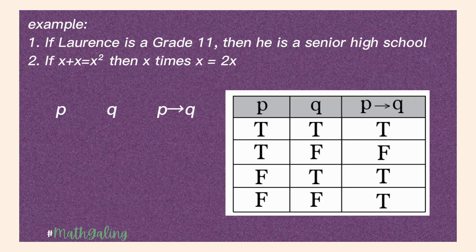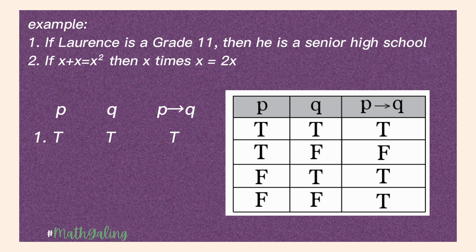Example: 'If Lawrence is in grade 11' — the first proposition is true — 'then he is a senior high school student.' That is also true because grade 11 belongs to senior high, so the truth value is true. Second: 'If x plus x equals x squared' — we know that is false because x plus x equals 2x — 'then x times x equals 2x' — that is also false. Therefore, F implies F is true.